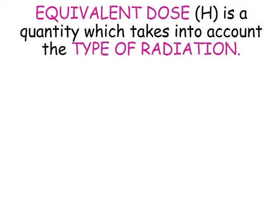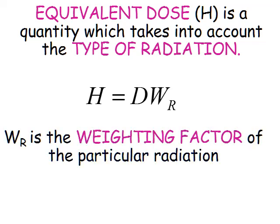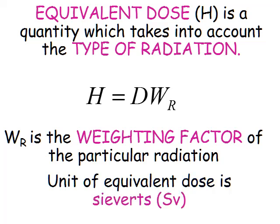The equivalent dose, symbol H, takes into account the type of radiation, making it much better than absorbed dose alone. The absorbed dose only accounts for energy and mass. The equivalent dose H equals the absorbed dose D multiplied by W_R, the radiation weighting factor. The unit of equivalent dose is the sievert.